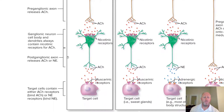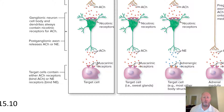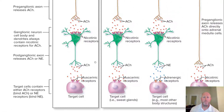Then the postganglionic axon releases either acetylcholine or norepinephrine. Those target cells contain either acetylcholine receptors, which bind acetylcholine, or norepinephrine receptors, which bind norepinephrine, and the muscarinic receptors of the target cell.